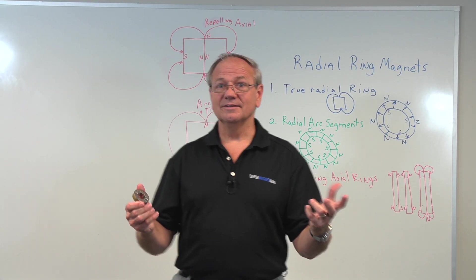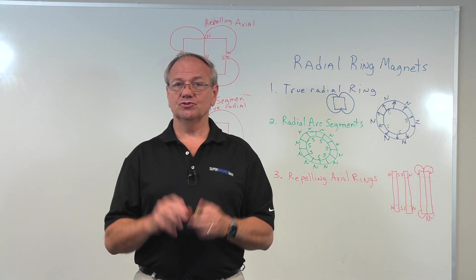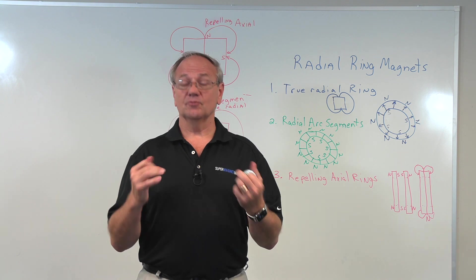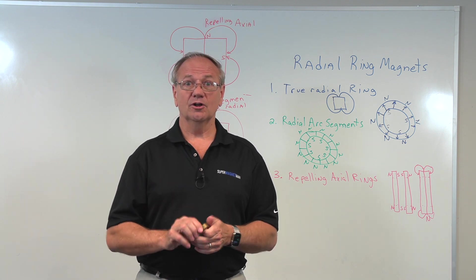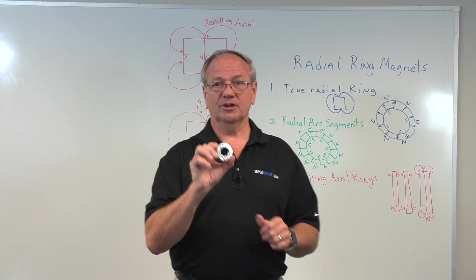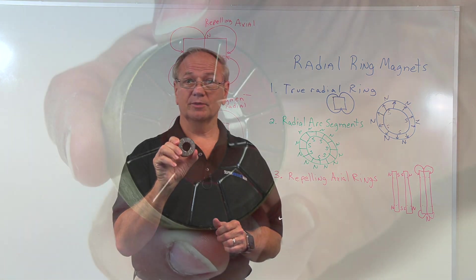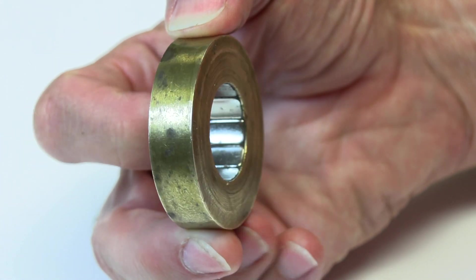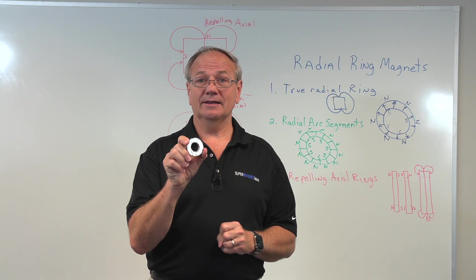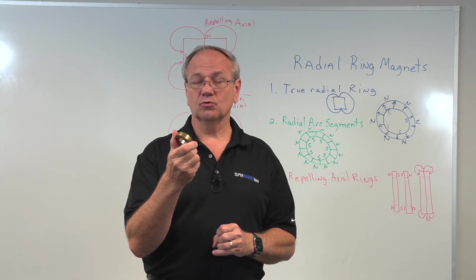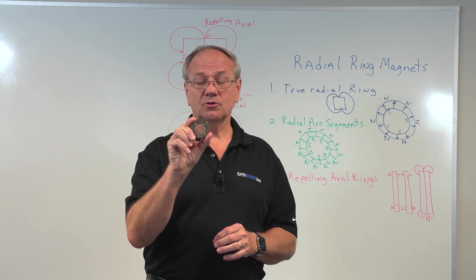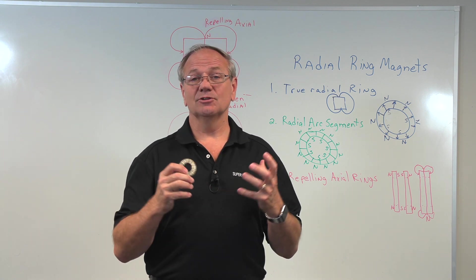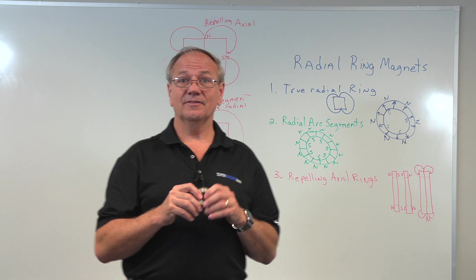So what does all this mean? Let's put together the pieces so that you can make the best decision for your application. First of all, we have the radial arc segments. And these are extremely good. You do see that imbalance on the field that's on the outside. But if you really need a large magnet, let's say you needed one 8, 10, 12 inches in diameter, you're stuck with the radial arc segments. That's the only magnet we can make a ring in that size.